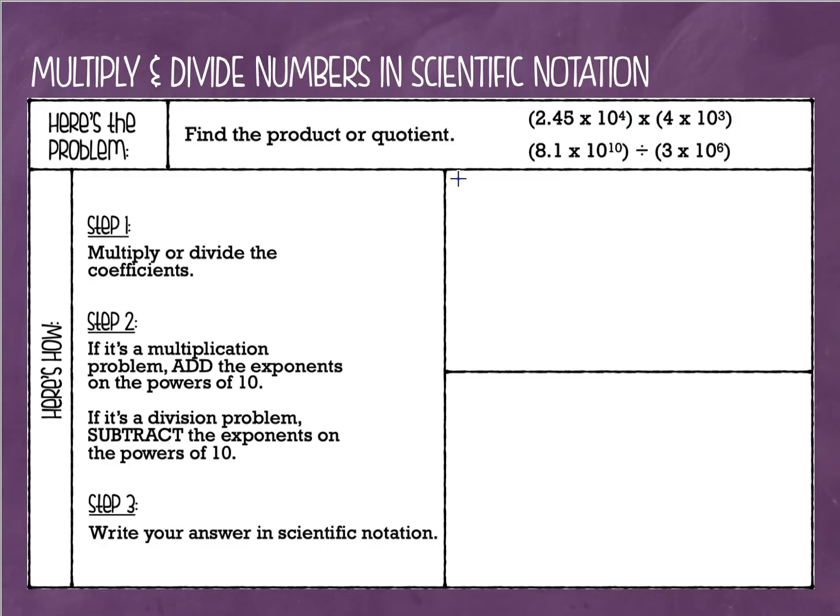We have our steps on the side, so let's get started here. First thing I'm going to do is just recopy my first problem here in this empty space. So we have 2.45 times 10 to the fourth power, and I'm going to be multiplying that to another number in scientific notation, which is 4 times 10 to the third power. All right, let's do step one. So step one is we are going to multiply or divide the coefficients. Now since this is a multiplication problem, obviously we will multiply them. So I'm going to do 2.45 times 4, and this is where you might want to break out your calculator. So 2.45 times 4 is going to give us 9.8.